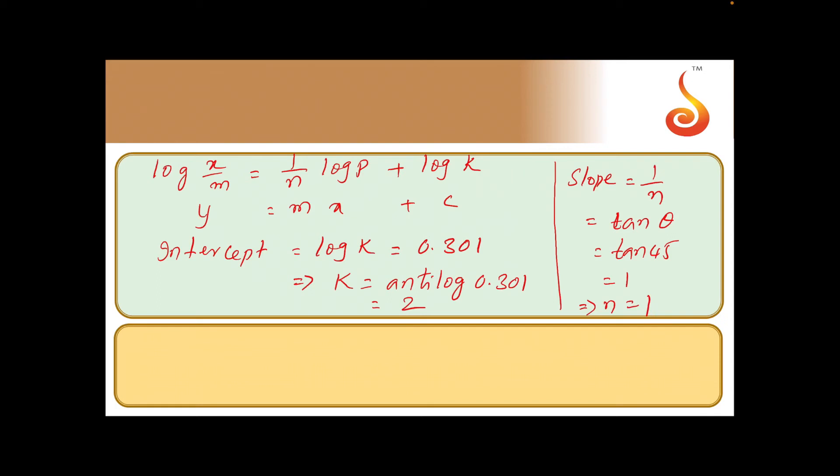So k is equal to 2 and n is equal to 1. Now we have to substitute the values in Freundlich equation.